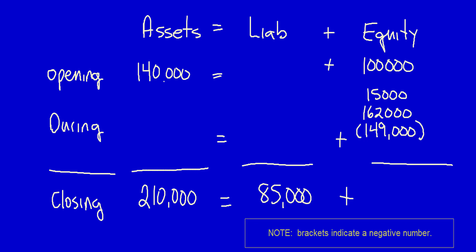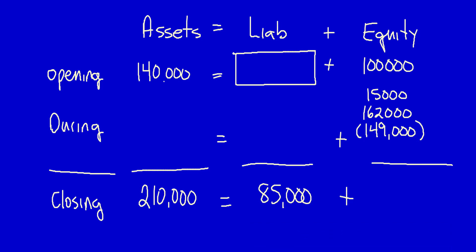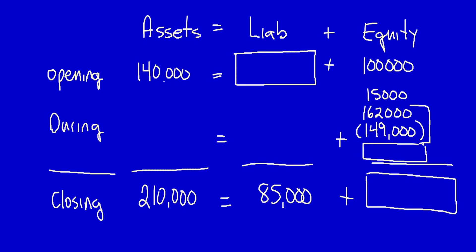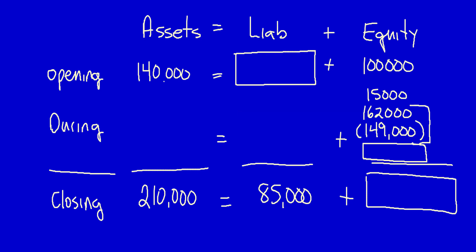They're asking for beginning liabilities, ending equity, profit, and dividends paid. Since dividends have been paid, I need to place a box here for that unknown number. I could also solve for the change in assets and the change in liabilities during the year — absolutely I could, even though I haven't been asked to. So let's solve the easy things first.